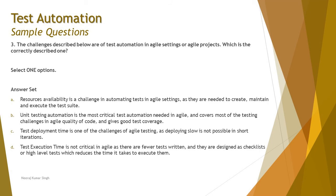Unit testing is critical, but the second part of option B is not correct. Option C: test deployment time is a challenge of agile testing as deployment is not possible in short iterations. We don't need to stress much on this because in agile, deployment is actually very fast. Test deployment time and deployment time are two different things when talking about continuous deployment versus test deployment, so this is not actually a challenge — it's the other way around.